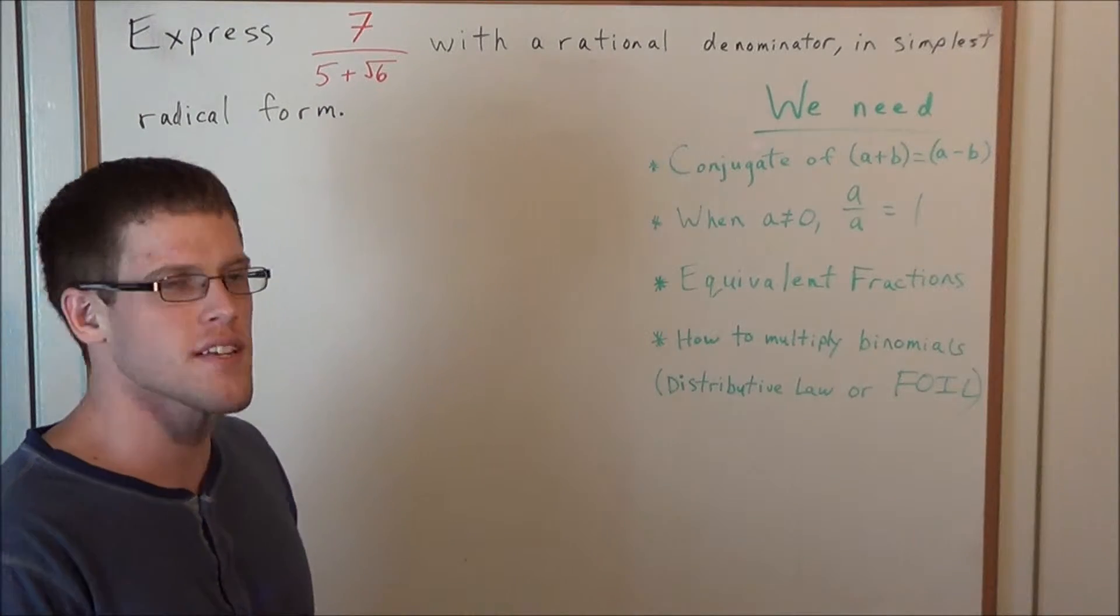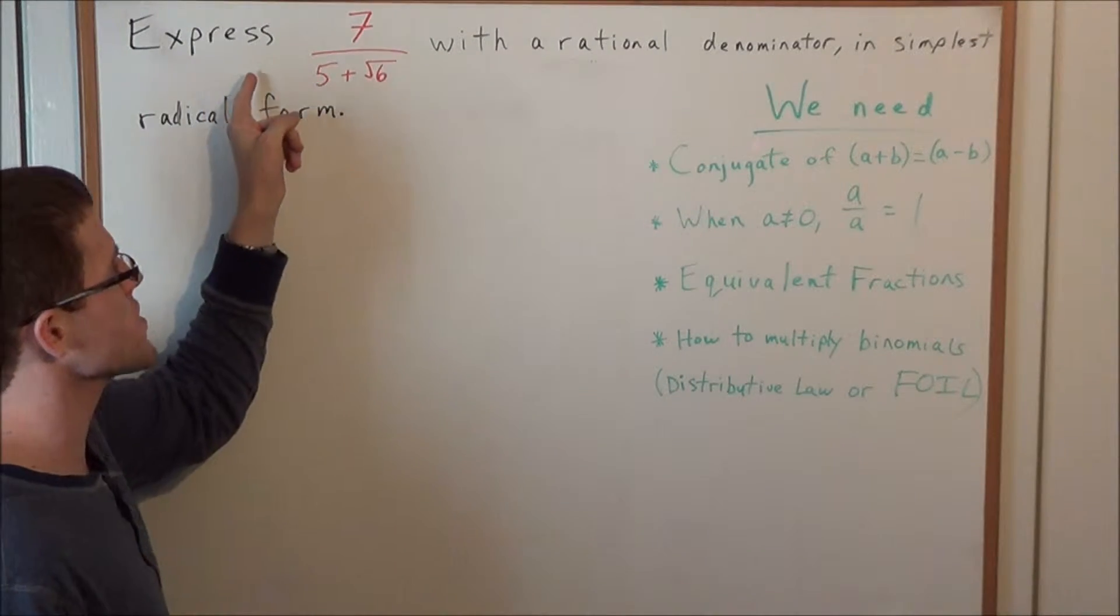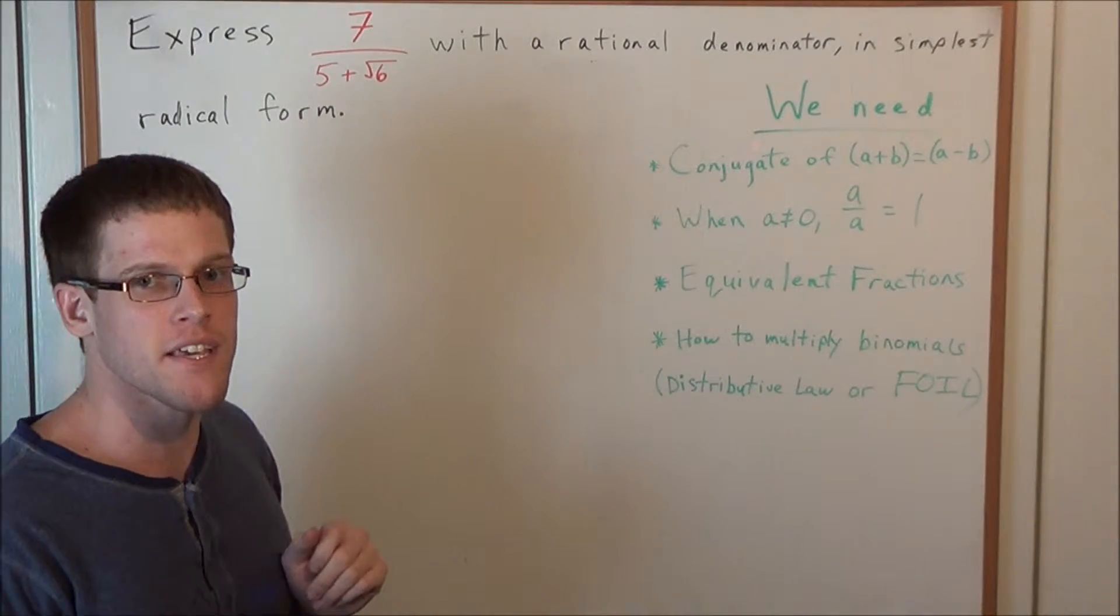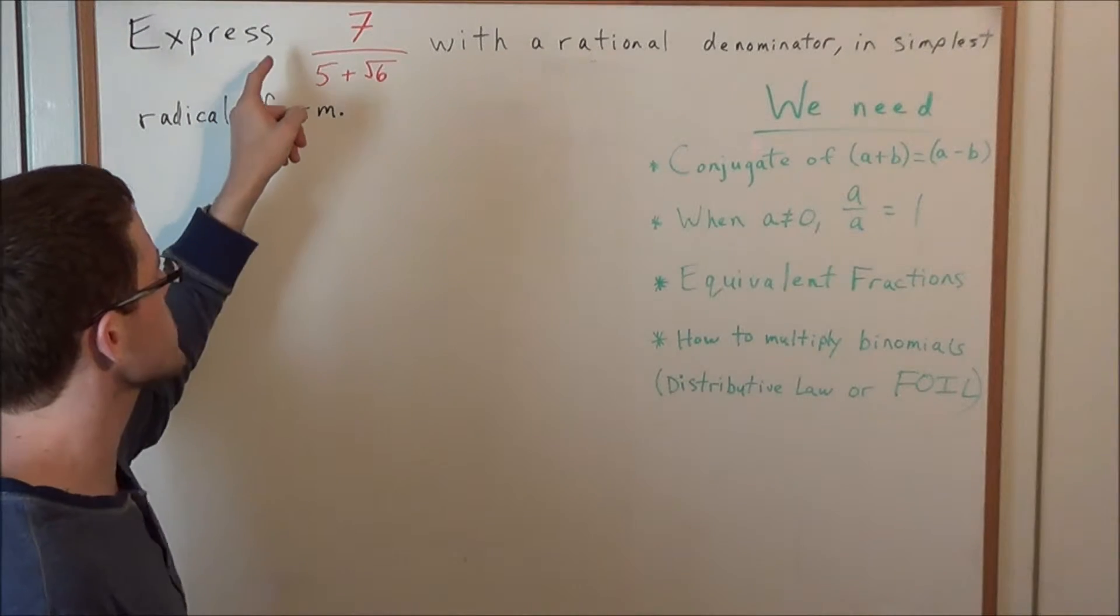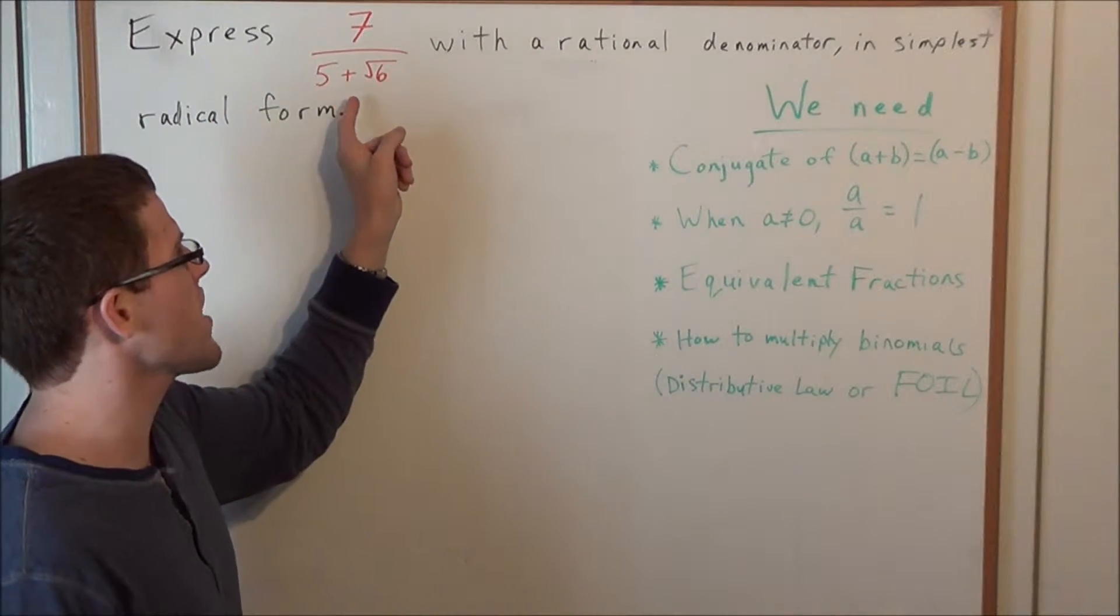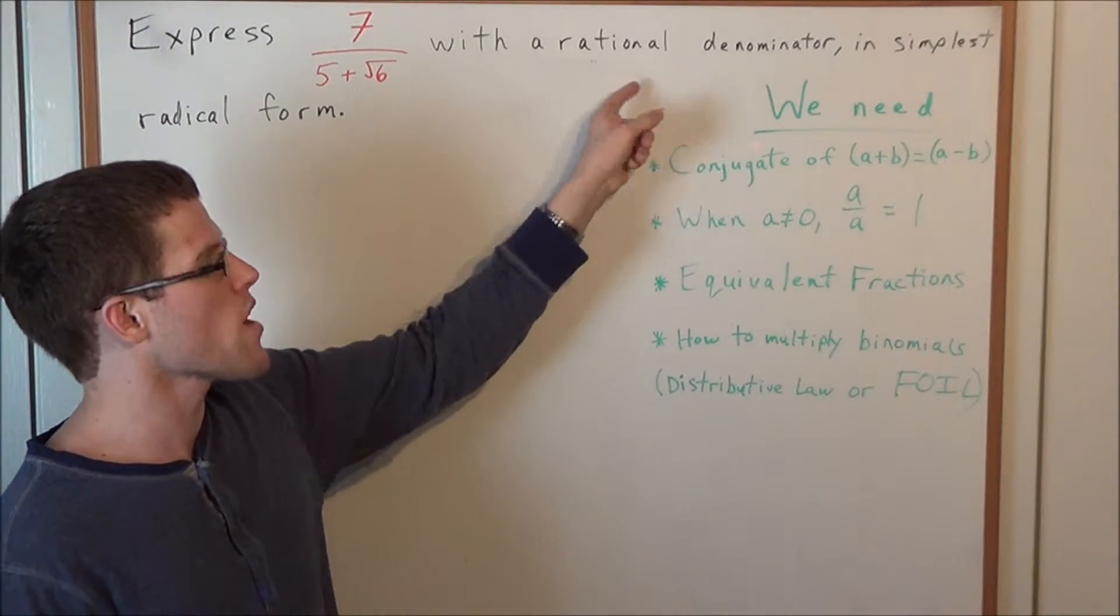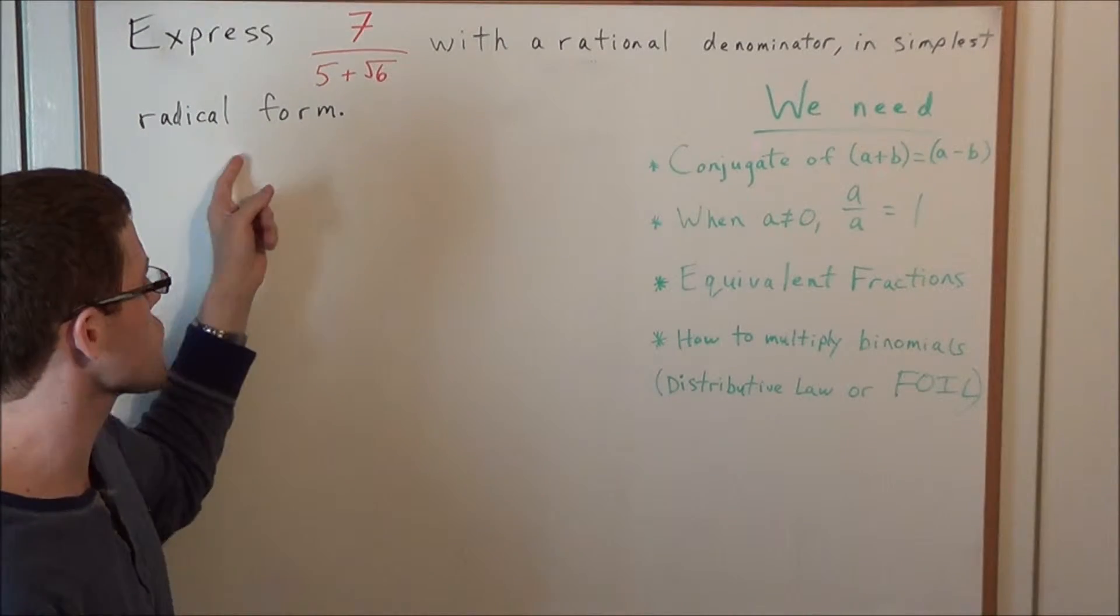Hello YouTube students, my name is Vincent, and today I want to take a look at rationalizing the denominator. In particular, I want to look at the problem express 7 divided by 5 plus the square root of 6 with a rational denominator in simplest radical form.